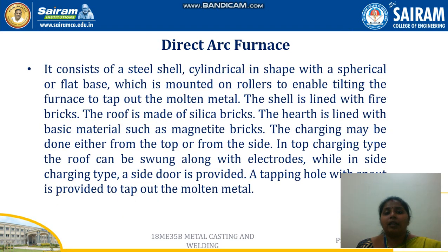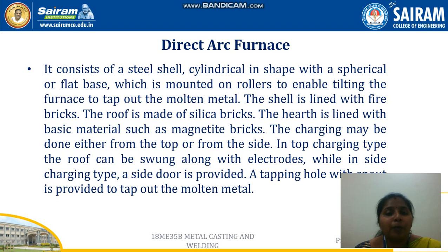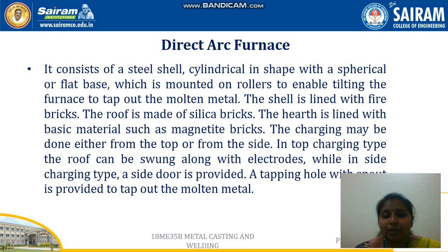In the direct arc furnace, the arc is produced directly in contact with the raw material to be melted. It consists of a steel shell that is cylindrical in shape with a spherical or flat base, mounted on rollers. The rollers make it easy to tilt the furnace after producing the molten metal. The shell is lined with refractory bricks, the roof is made up of silica bricks, and the hearth is lined with basic material such as magnetite bricks.